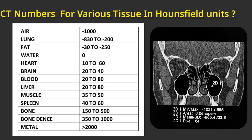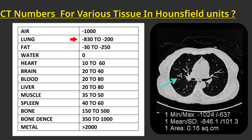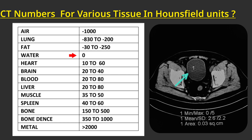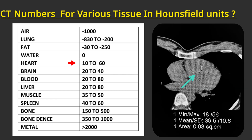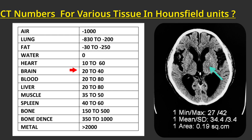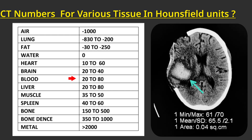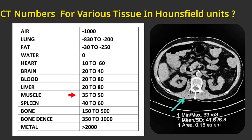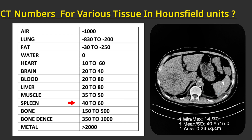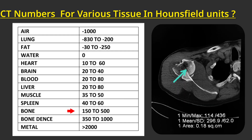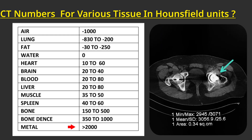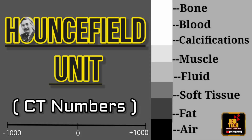CT numbers for various tissues in Hounsfield units: Air −1000, Lung −830 to −200, Fat −250 to −30, Water 0, Heart 10 to 60, Brain 20 to 40, Blood 20 to 80, Liver 20 to 80, Muscle 35 to 50, Spleen 40 to 60, Bone 150 to 500, Dense bone 350 to 1000, Metal above 2000.